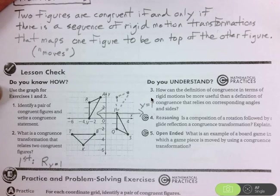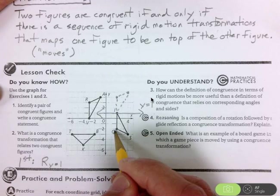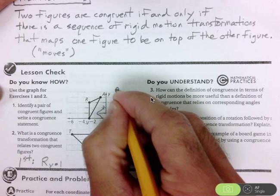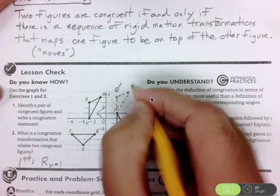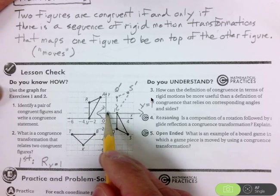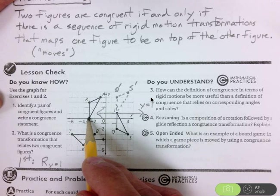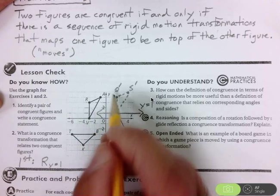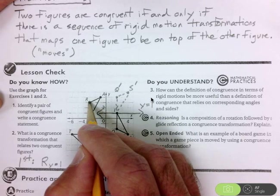But now look, we can translate it and we'll be done. If I take this point Q, this is the new image of Q. I'll call it Q prime. Here's I prime. Here is S prime. Notice what happens. If I move I prime 5 to the left and down 1, it's on top of the V. If I move Q prime 5 to the left and down 1, it's on R.